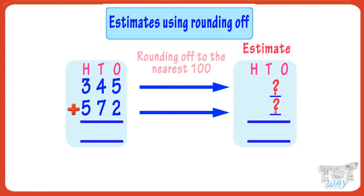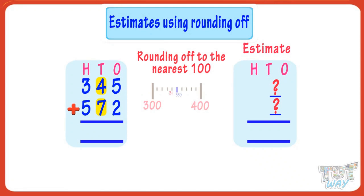For rounding off numbers to the nearest 100, we look at the tens digit. If it's less than five, we round it down, and if it's greater than or equal to five, we round it up to the next 100.